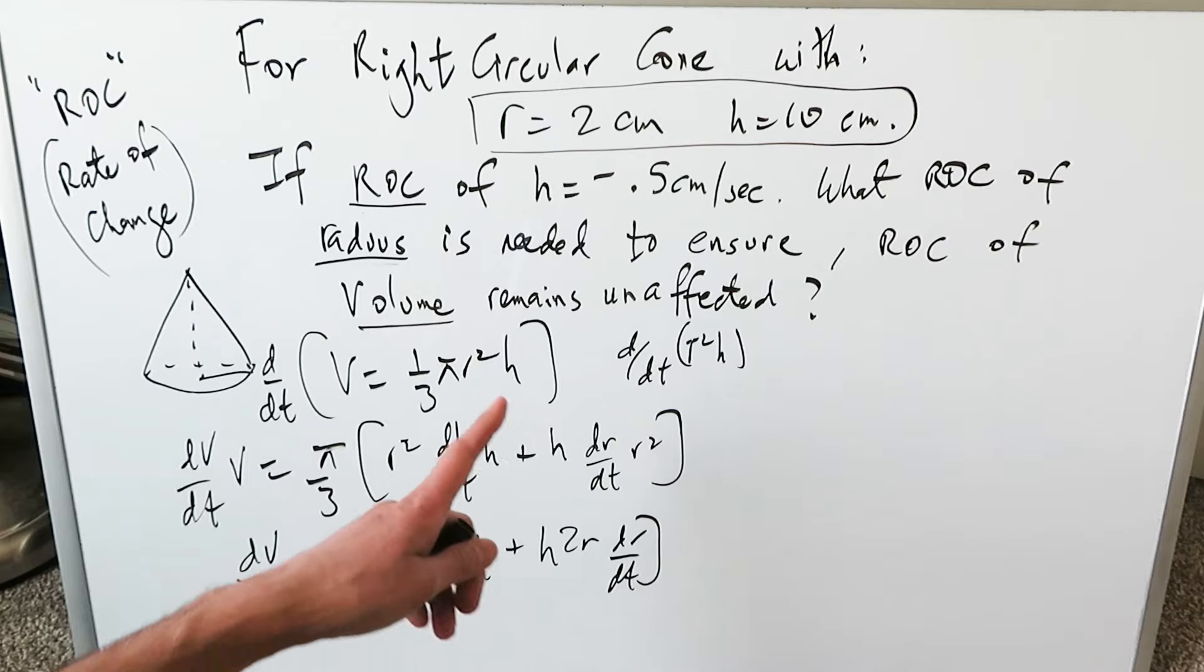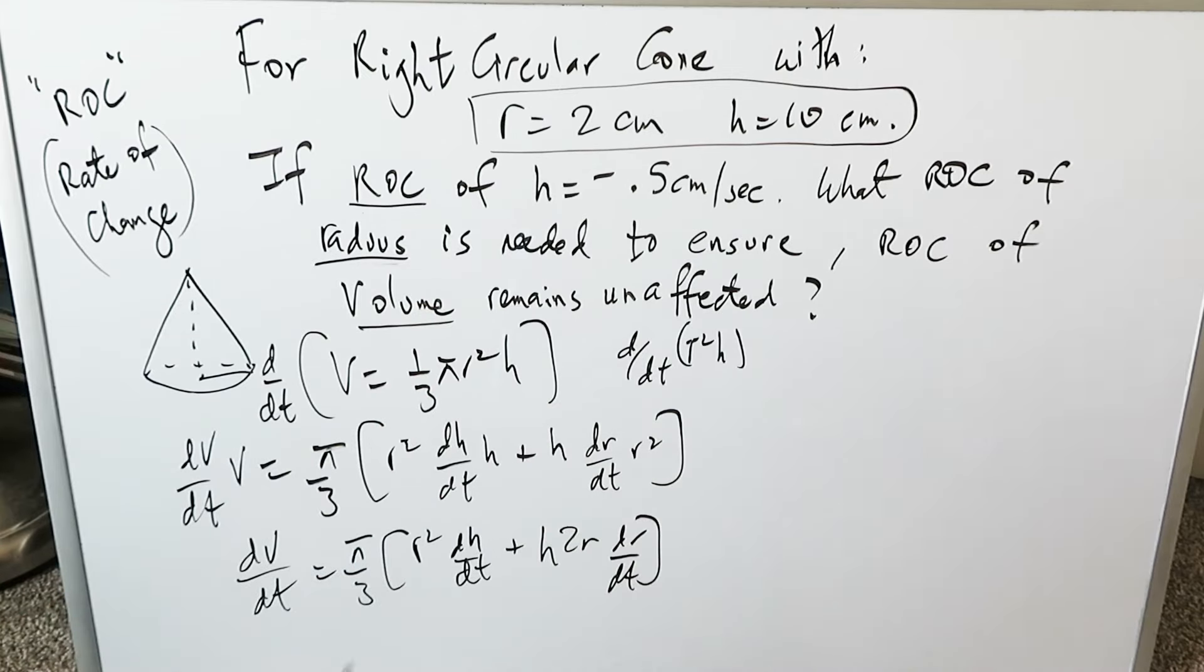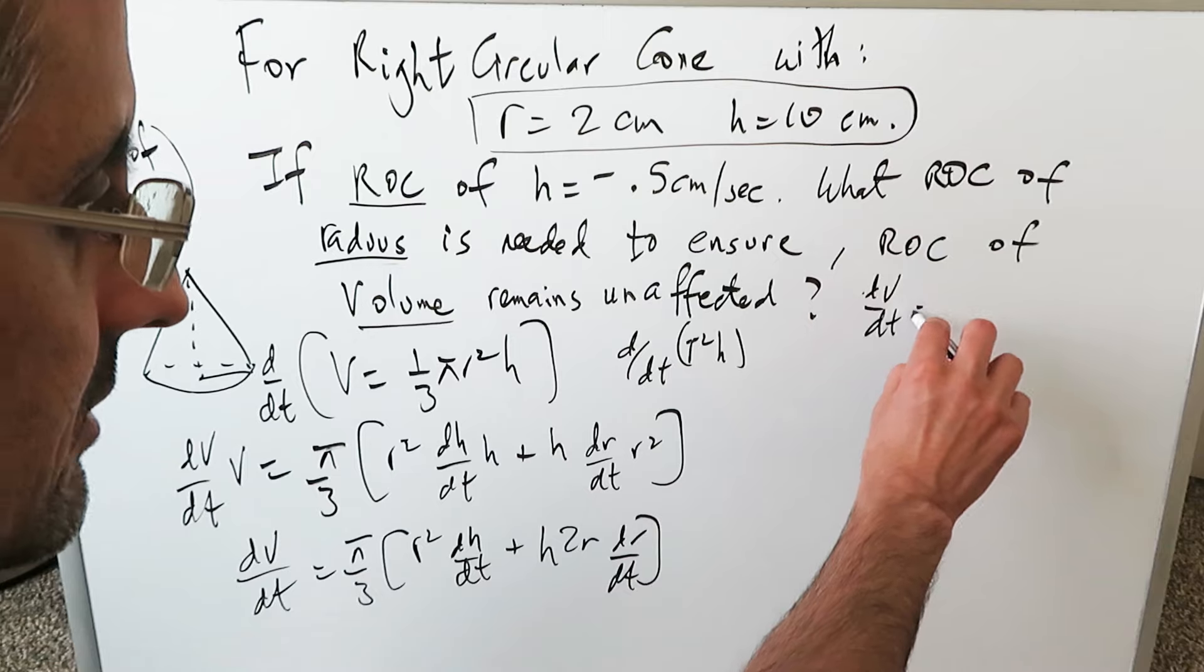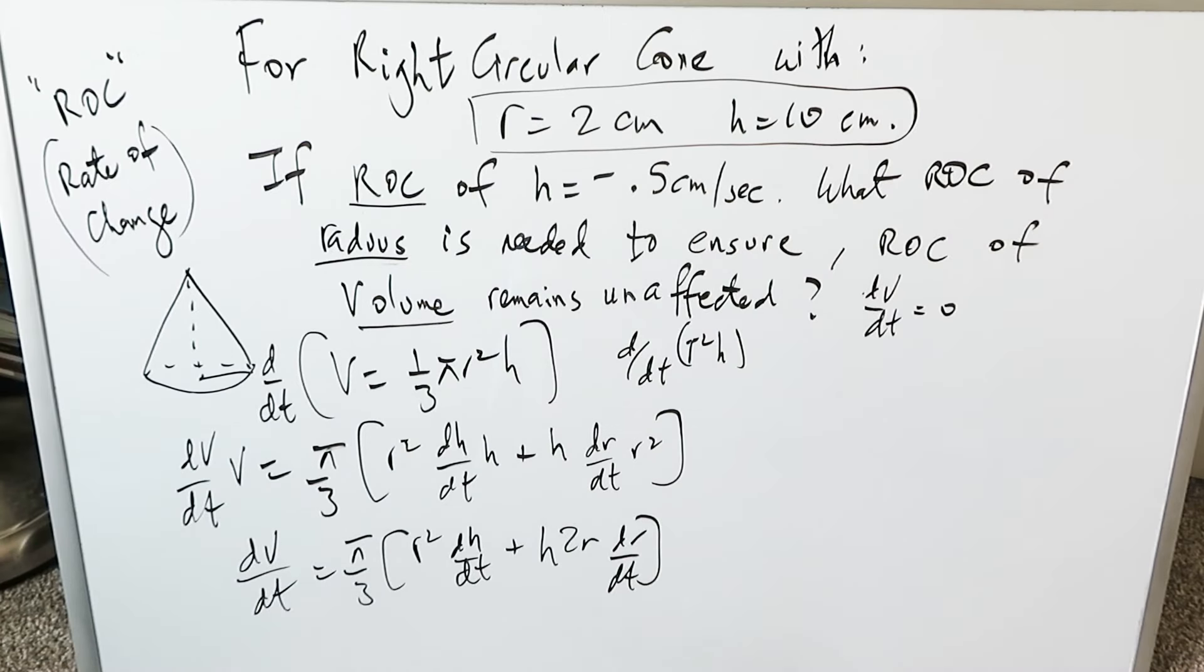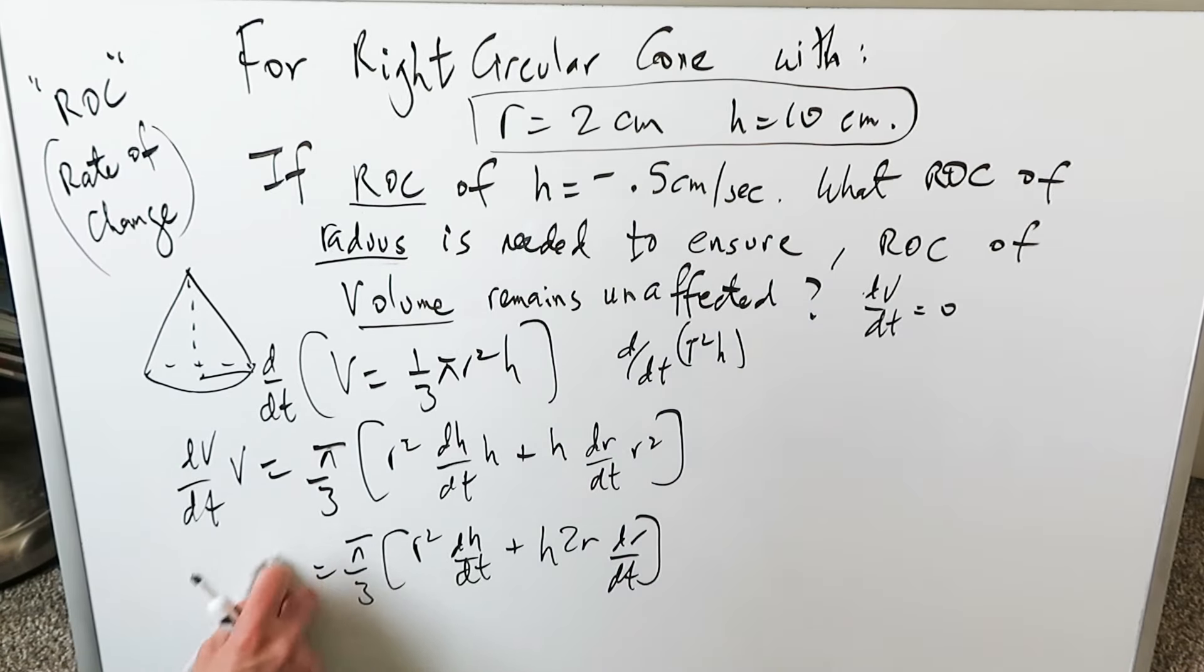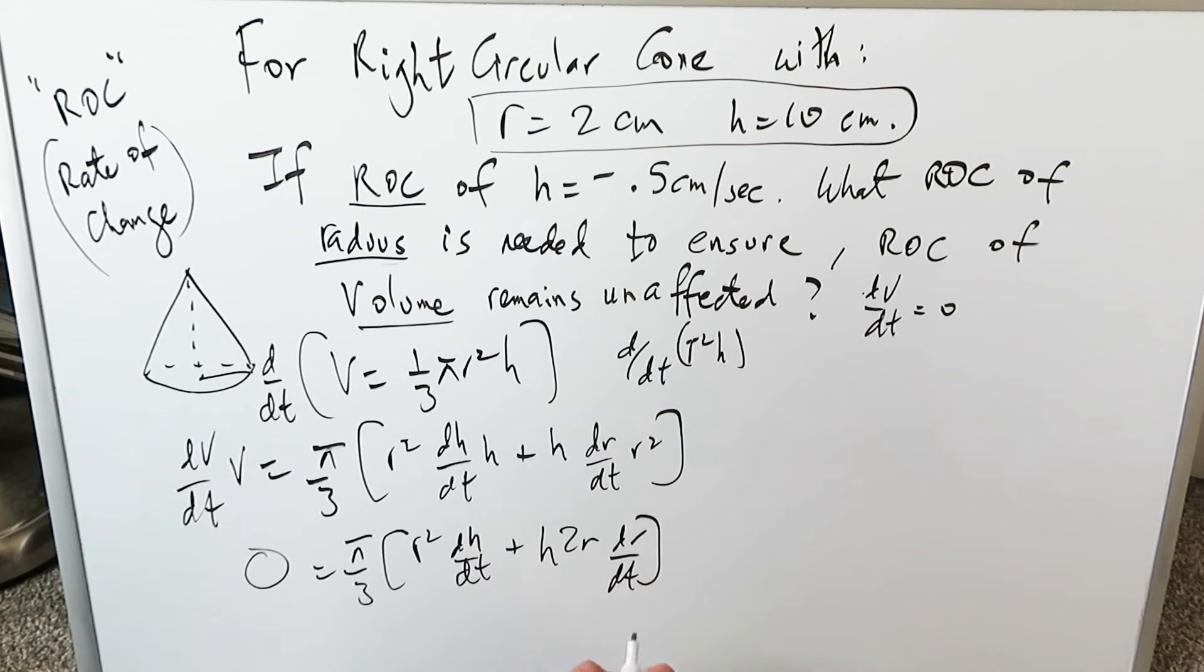Now think about it. The rate of change of volume must remain unaffected, which means dV/dt should be equal to zero, and that's exactly what you would have. You can bring this and make it equal to zero because you're trying to determine the rate of change of radius over time, which would ensure that as the height is becoming smaller, how should the radius behave such that the rate of change of volume will remain unaffected.